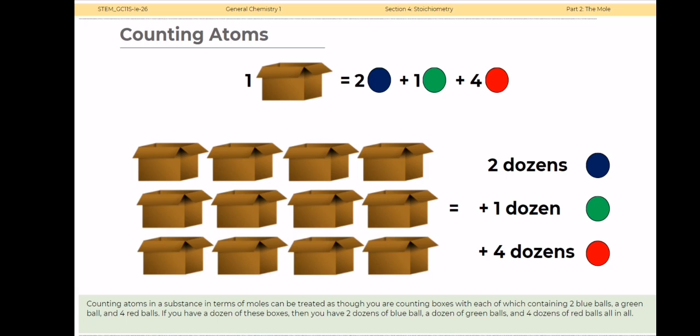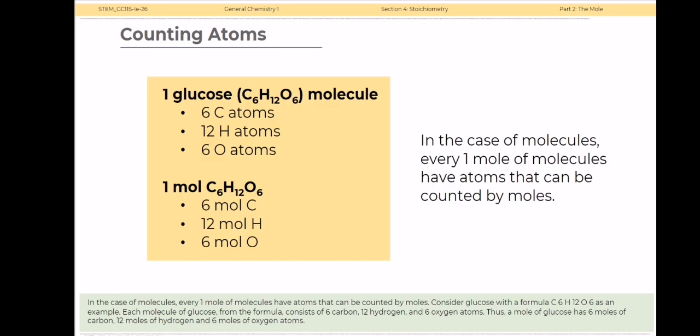In the case of molecules, every one mole of molecules has atoms that can be counted by moles. Consider glucose with a formula of C₆H₁₂O₆ as an example. Each molecule of glucose consists of 6 carbon, 12 hydrogen, and 6 oxygen atoms. Thus, a mole of glucose has 6 moles of carbon, 12 moles of hydrogen, and 6 moles of oxygen atoms.